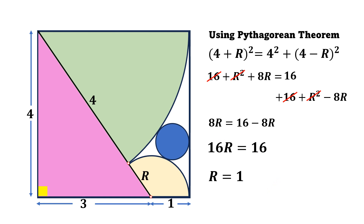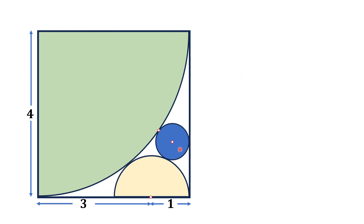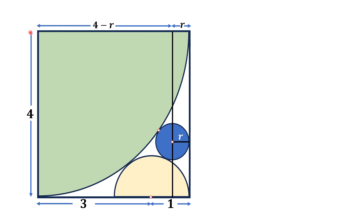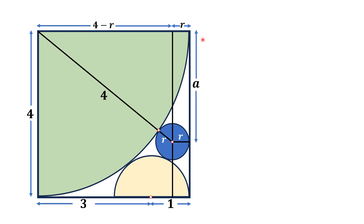Now we locate the center of the blue shaded circle and call its radius lowercase r. This particular length is also r, and since the side of the square is 4, the remaining length is 4 minus r. We draw a line segment from the center of the blue shaded circle to the center of the quarter circle — one vertex of the square. This length is r and this length is 4, so the whole length is 4 plus r. Let's call this length A.